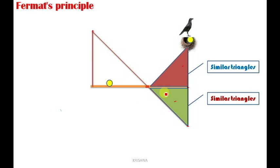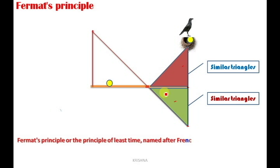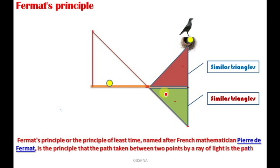Fermat's principle, also called the principle of least time, named after French mathematician Pierre de Fermat, states that the path taken between two points by a ray of light is the path that can be traversed in the least time. That means light is always in a hurry — light always chooses the shortest distance. That is Fermat's principle.